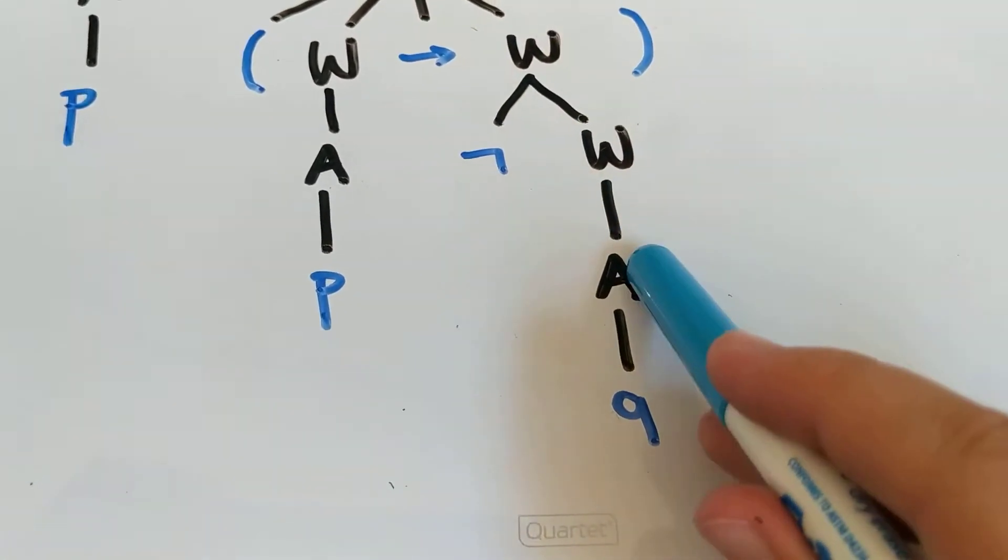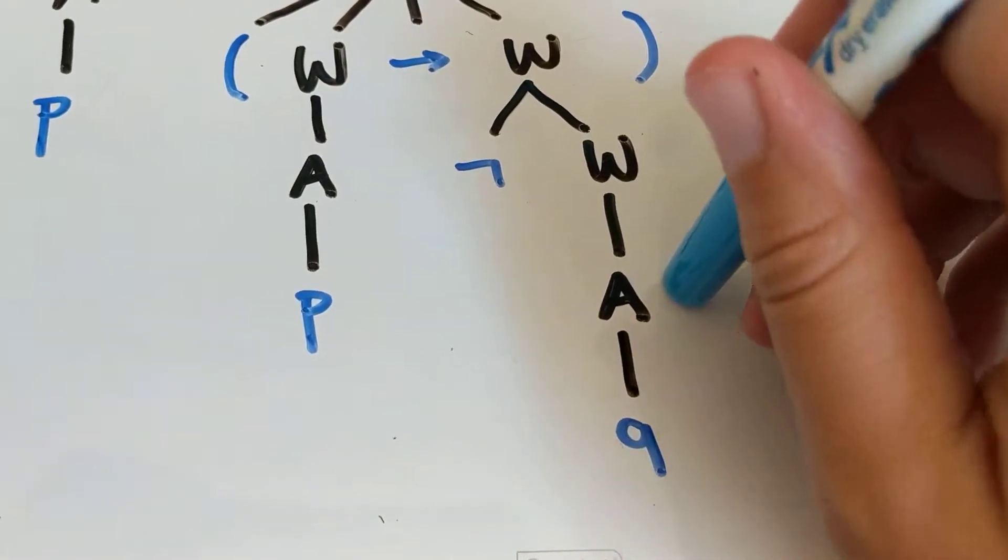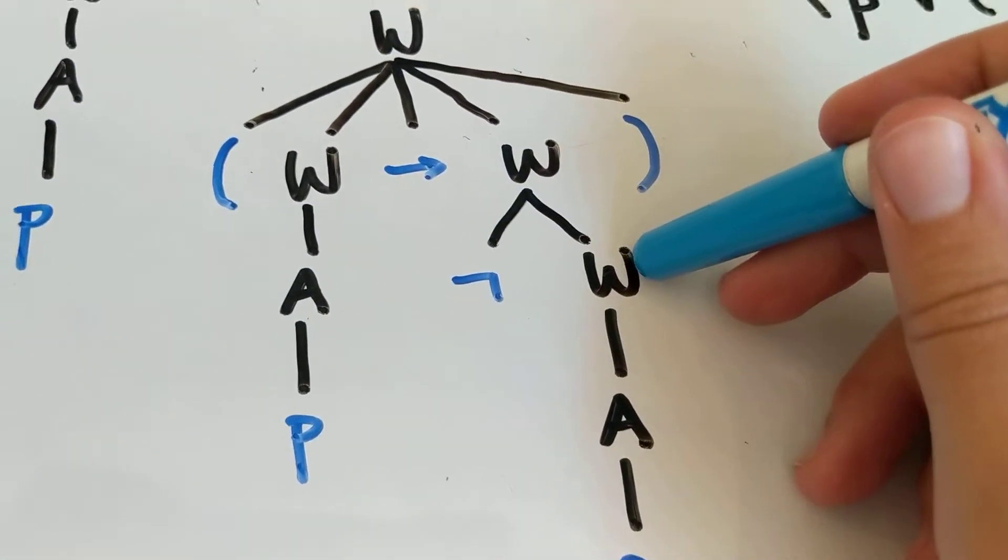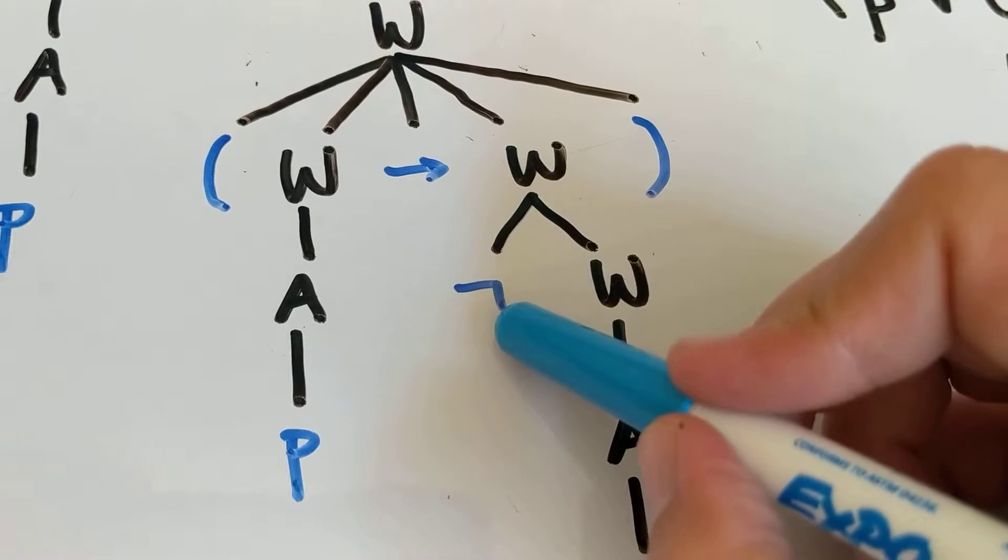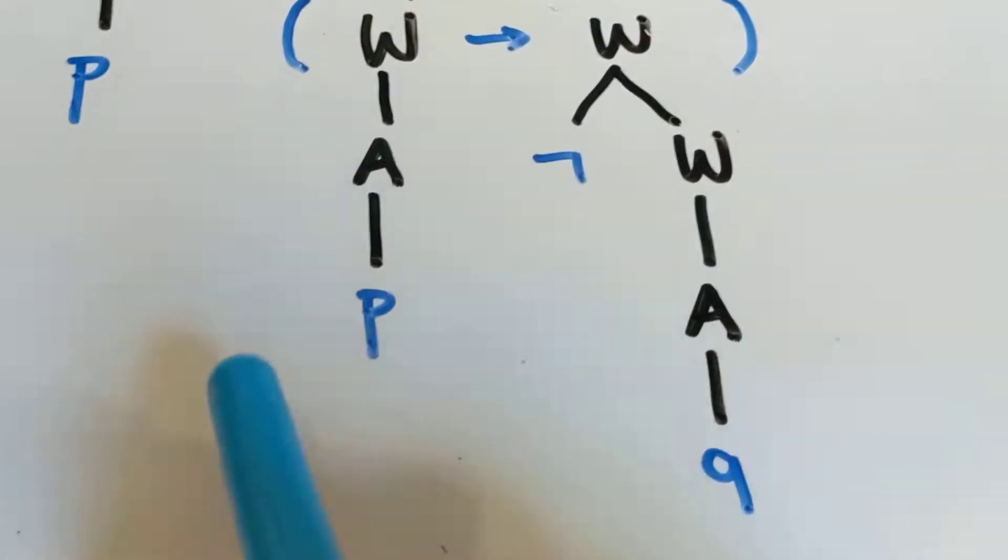We can build this atomic statement into a well-formed formula, and then we can add a not symbol into a well-formed formula.